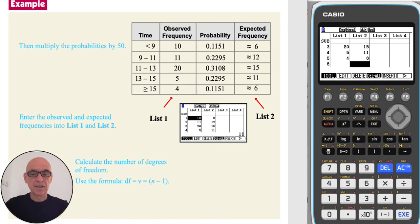To calculate the number of degrees of freedom, use the formula ν equals n minus 1, where n is the number of categories. In this case, n is equal to 5, so 5 minus 1 is equal to 4, so there are 4 degrees of freedom.